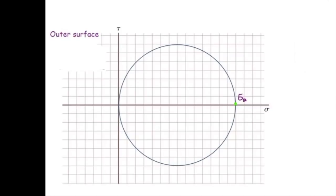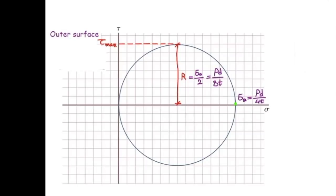Is there any shear stress expected in this 3D stress element? Yes — and it equals the radius of the Mohr's circle. The diameter of the Mohr's circle is σ_a minus 0, which is σ_a = pd / 4t. The radius — and thus the maximum shear stress — is half the diameter, giving τ_max = pd / 8t. So there will be shear stress, and its magnitude is determined from this equation.